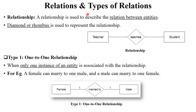The next component is relations and types of relations. A relationship is used to describe the relation between entities. For example, teacher teaches student — there is a particular relationship between teacher and student. This is called a relationship, and relationships are shown by a diamond shape or rhombus shape.